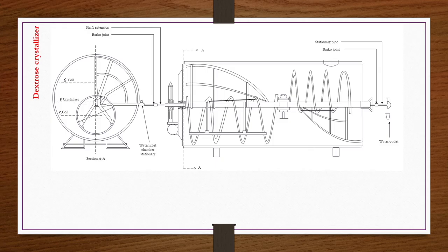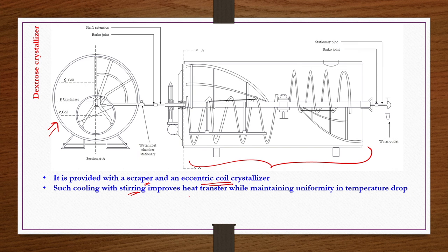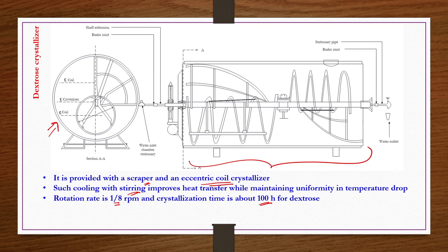The dextrose crystallizer frontal view is shown here. Primarily, mixing and cooling are done: mixing is done to achieve uniformity in crystal size, while cooling promotes crystallization. The crystallizer is provided with a scrapper and an eccentric coil crystallizer. Cooling with stirring improves heat transfer while maintaining uniformity in temperature drop. Rotation rate is only 1/8 rpm and crystallization time is about 100 hours for dextrose. Water is passed through the coil for cooling purpose.